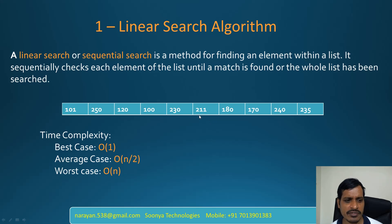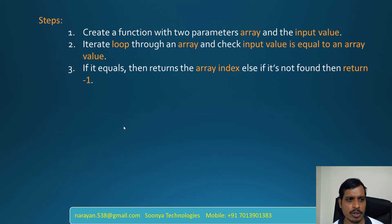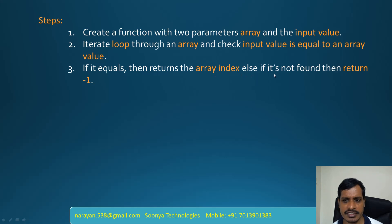For this algorithm, the time complexity for the best case is O(1), average case is O(n/2) — that means O(10/2) equals 5 — and the worst case is O(n), which is O(10) here. The steps to find an item using sequential search: first, create a function with two parameters — array and the input value. Second, iterate through the array and check if the input value equals the array value. Third, if it equals, return the array index; else if not found, return -1. Use linear search when the list contains unsorted data.